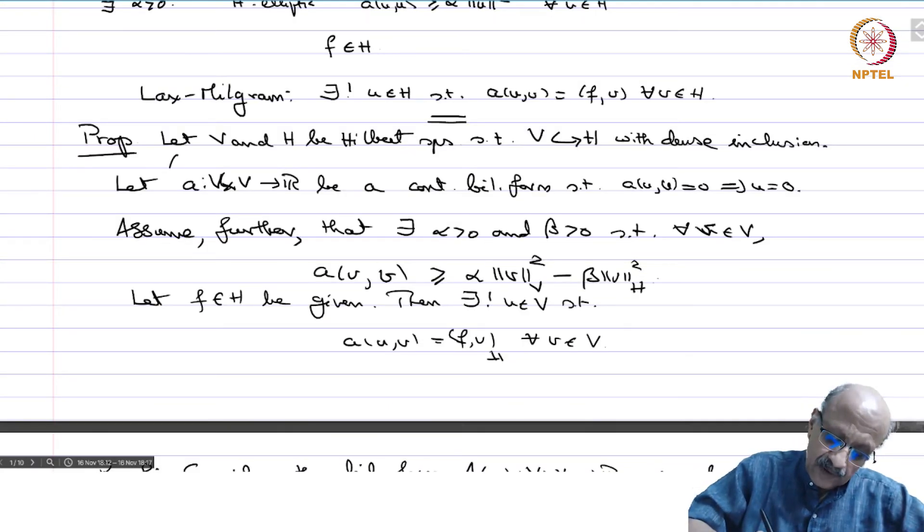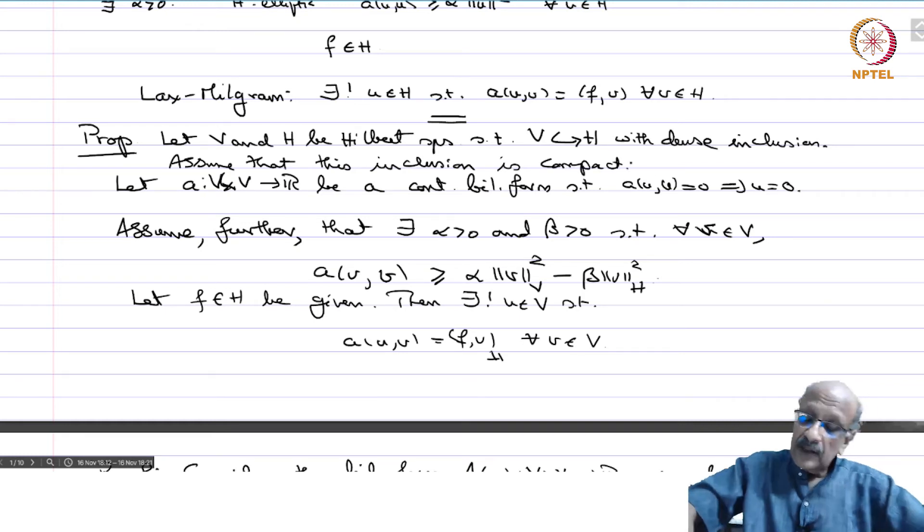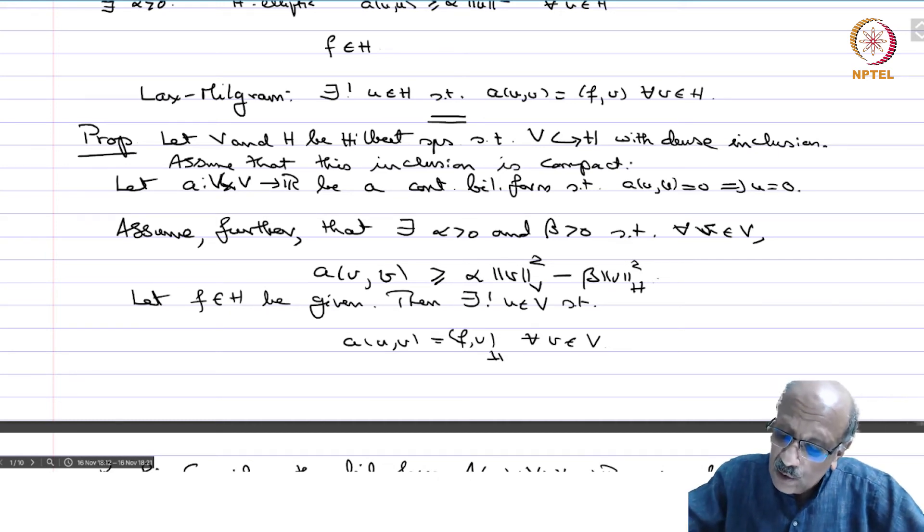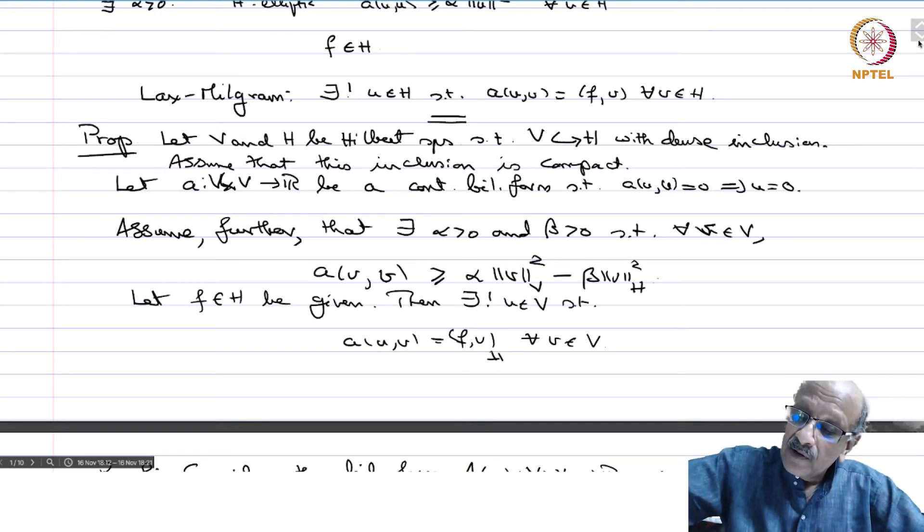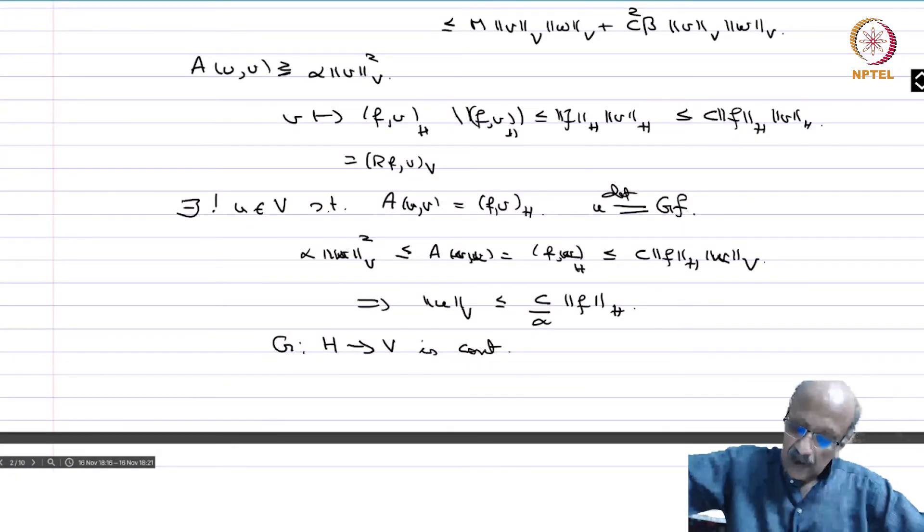I forgot one important hypothesis. Assume further that this inclusion is compact. The dense inclusion is dense and compact—it's a linear operator between Hilbert spaces, the inclusion map, and that map is compact. That's why this theorem comes in this chapter.